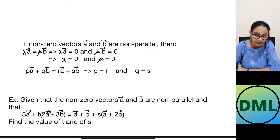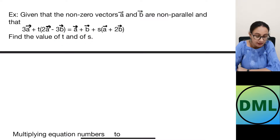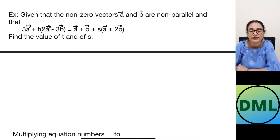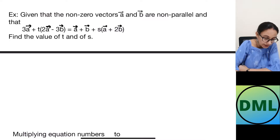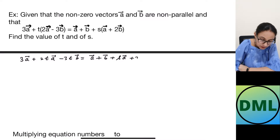Example 1: given non-zero non-parallel vectors a and b, and that 3a + t(2a − 3b) = a + b + s(a + 2b), find the values of t and s. We expand both sides: the left becomes 3a + 2t·a − 3t·b, and the right becomes a + b + s·a + 2s·b.